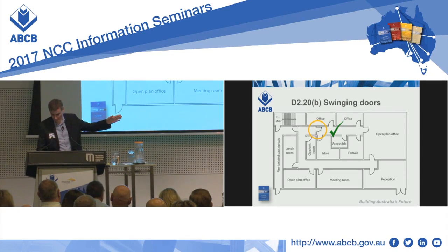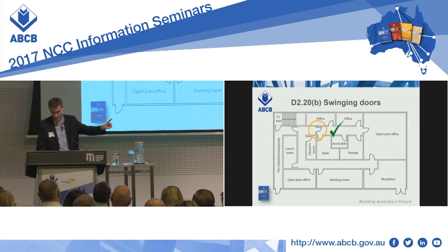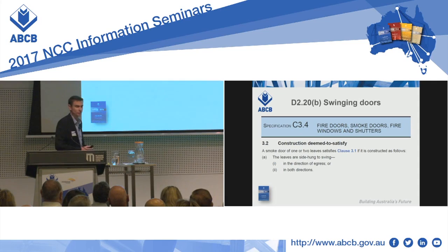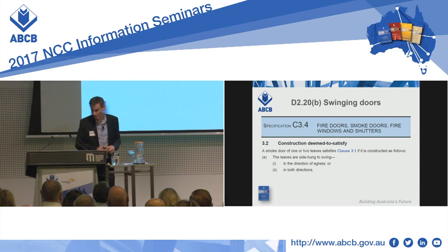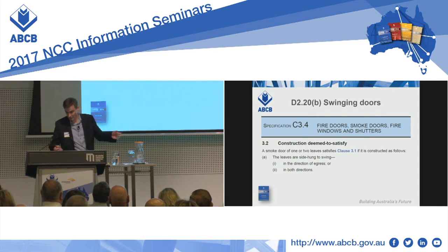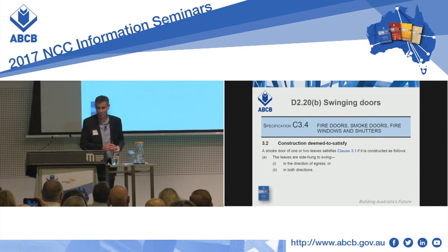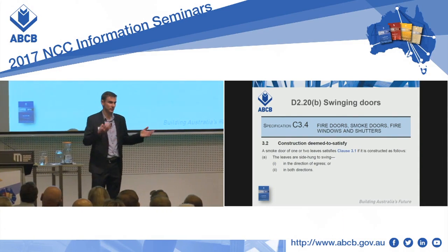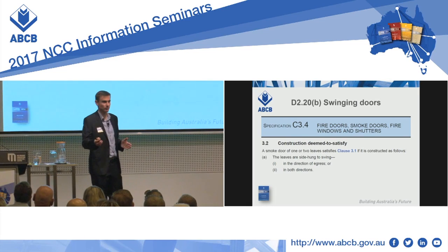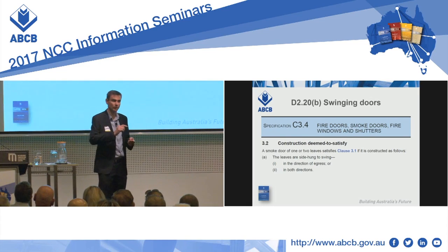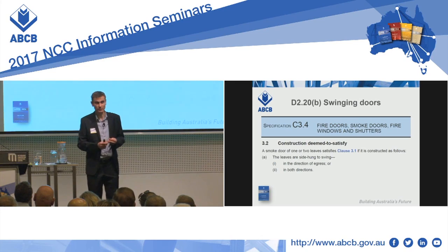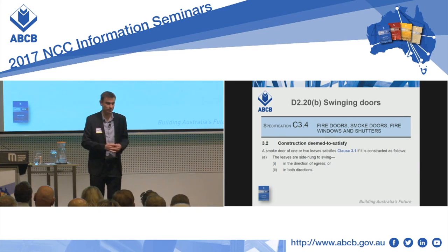I'll take questions in a moment — just give me one more slide. We have to keep in mind there are a few other provisions which apply to swinging doors besides D220. We've got Specification C3.4 on the screen here. So when you have your smoke walls and a smoke door in your smoke wall — this is in your hospitals, aged cares, and your corridors more than 40 metres in accordance with C214 in your Class 2s and 3s — those doors have to go in both directions or in the direction of egress.